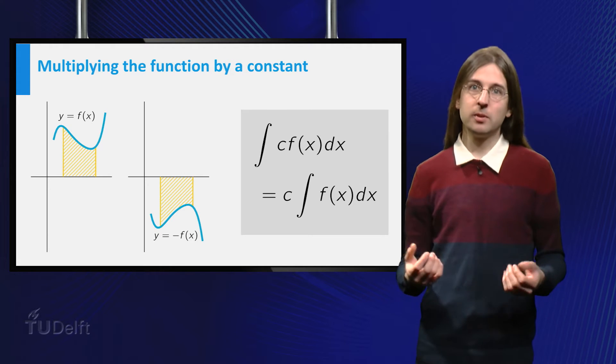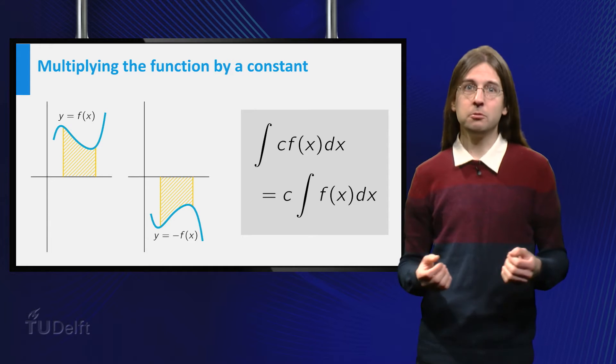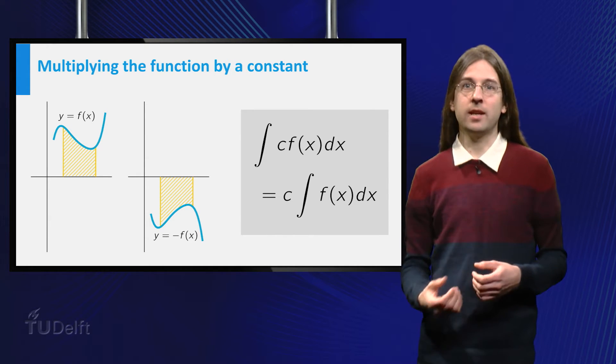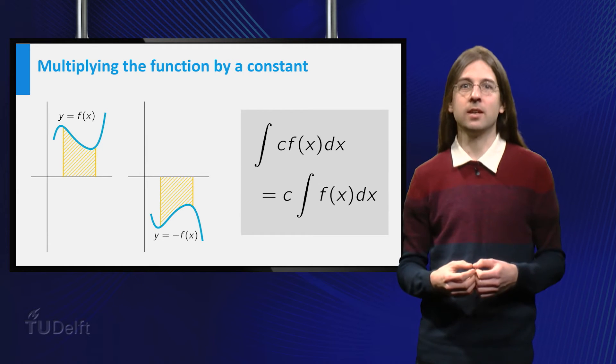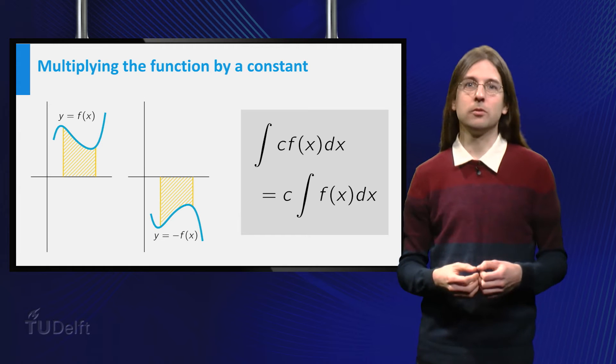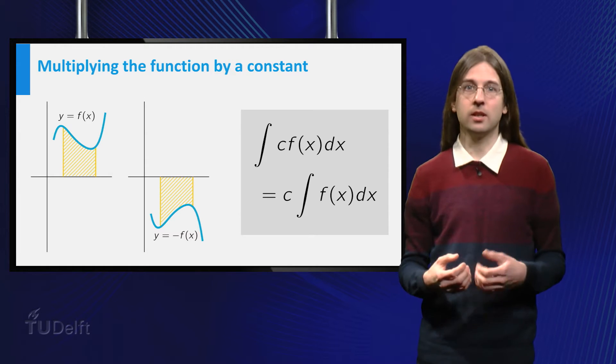after multiplication by minus 1, the area remains the same, but as it is below the horizontal axis, we have to count this area negatively. Thus the rule of calculation still holds in this case.